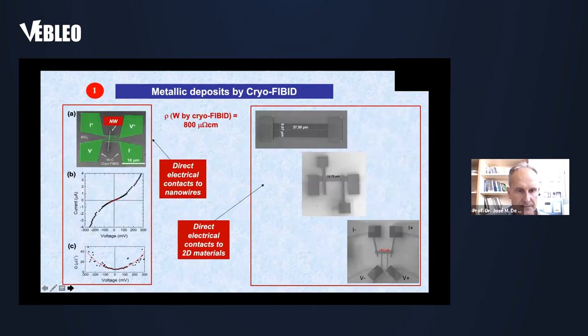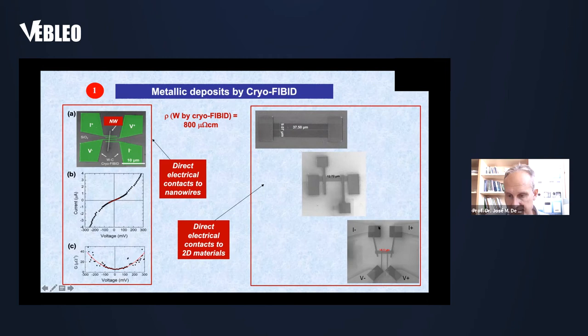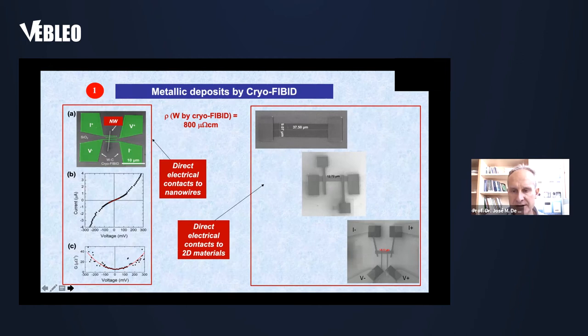You can even create metallic deposits: tungsten cryo-deposits have an electrical resistivity of only 800 μΩ·cm, so they can be used as electrical contacts to measure the electrical properties of nanowires. More recently, we have created electrical contacts to two-dimensional materials with any desired shape, directly and without the use of any resist. We will explore in future the capability for fast direct growth of contacts on these two-dimensional materials.